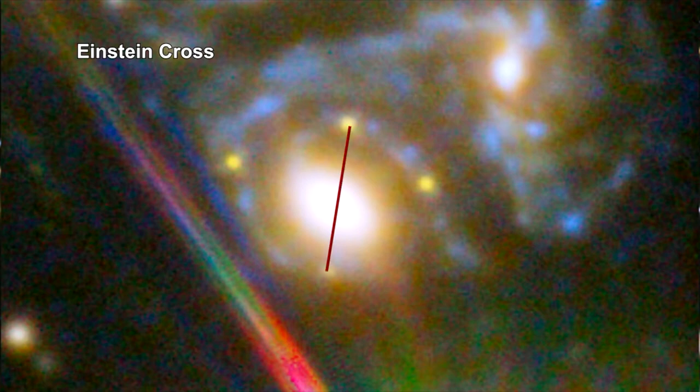The images are arranged around an elliptical galaxy in a formation known as an Einstein Cross.